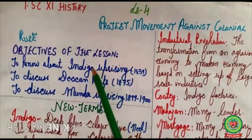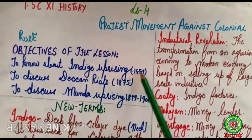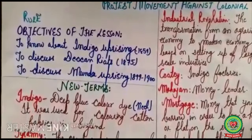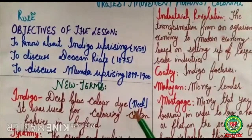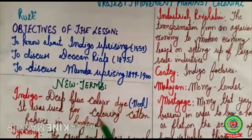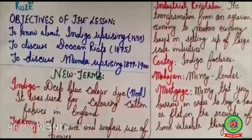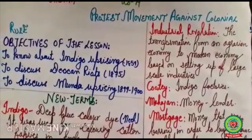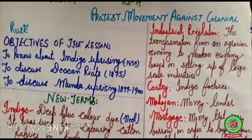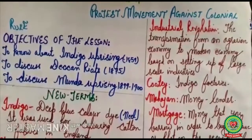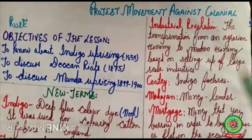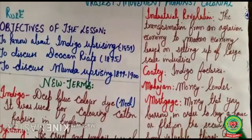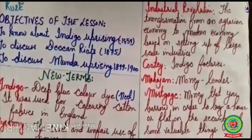In this session we will be discussing the Indigo Uprising of 1859 and the Deccan Riots of 1875. Before going ahead, we will discuss the new terms of this lesson. Indigo is a deep blue color dye, called 'Neel' in Hindi, used for coloring cotton fabric in England. Tyranny means the cruel and unfair use of power. Industrial Revolution refers to transforming from an agrarian economy to a modern economy based on large-scale industries. Hooty refers to indigo factories. Mahajan means moneylender. Mortgage refers to money borrowed to buy a house or property on the security of valuable things.